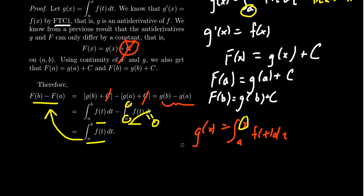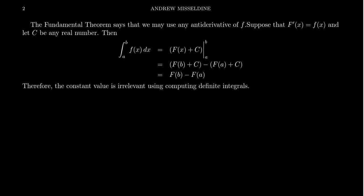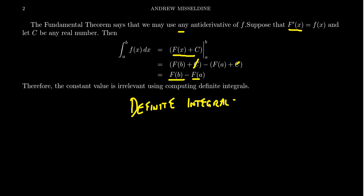There are two important takeaways from the Fundamental Theorem of Calculus and its proof. The first is that you can use any antiderivative of little f — it doesn't matter which one. If you take F(x) plus c, the plus c's cancel out and you end up with F(b) minus F(a). So with definite integrals, no plus c is necessary.